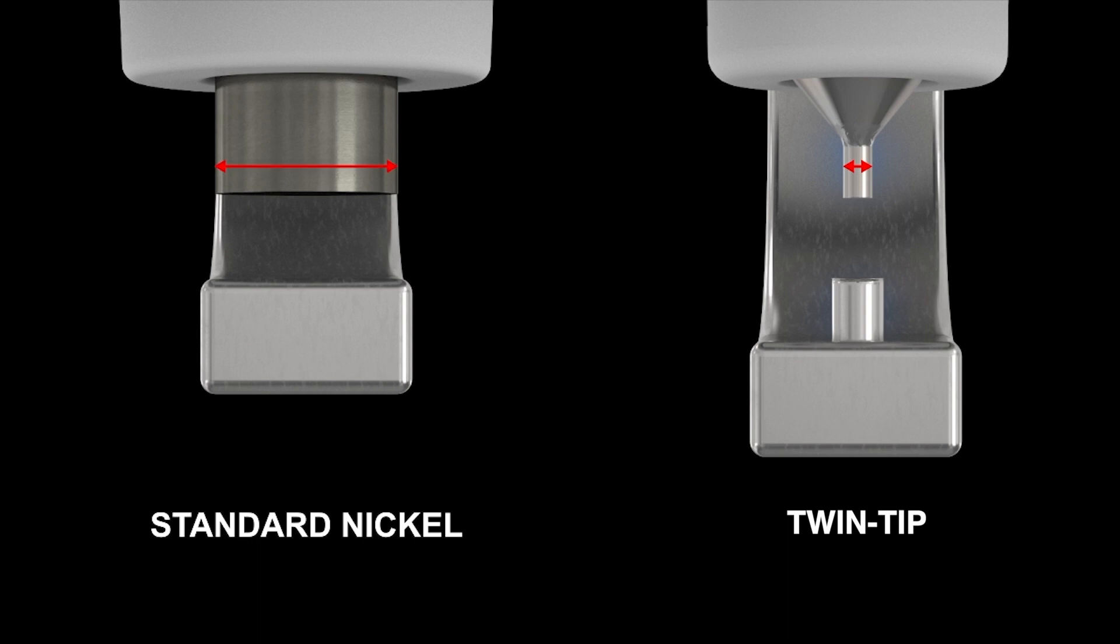In fact, Iridium Twin-Tip spark plugs are constructed with center electrodes ranging from just 0.4 to 0.55 millimeters in diameter, while standard type nickel electrodes are typically 2.5 millimeters diameter.